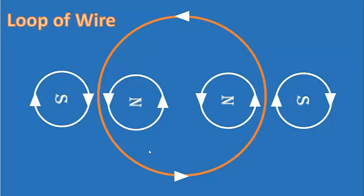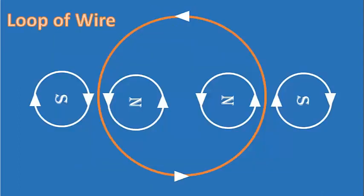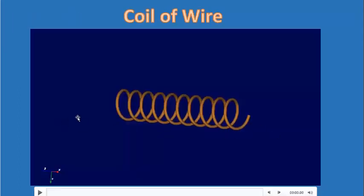What we're going to do next is look at a coil of wire. A coil of wire is like a spring — it's really just a whole bunch of loops of wire all in one. I'm going to animate it and show you how this behaves very similarly to the single loop of wire. I'm also going to show you how this relates to the permanent magnet.